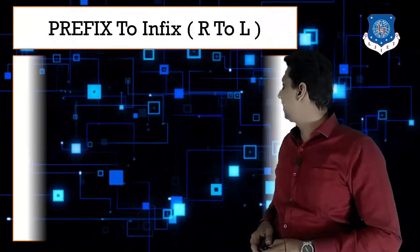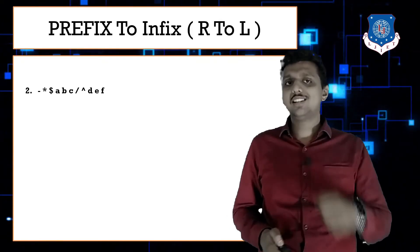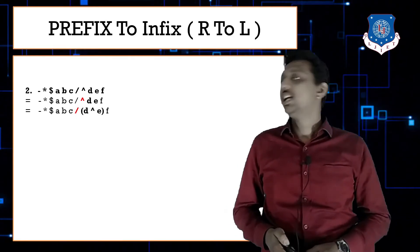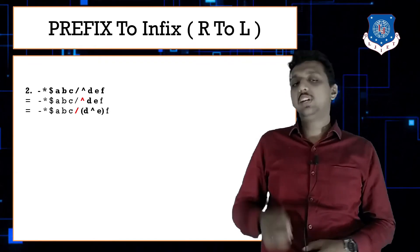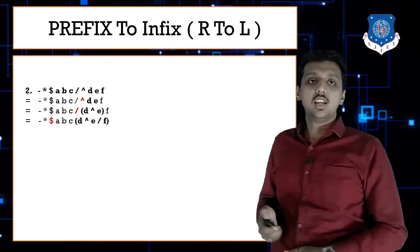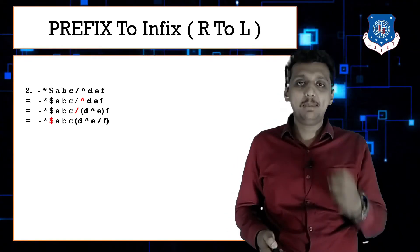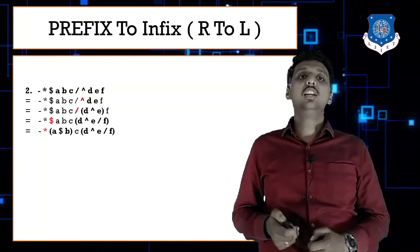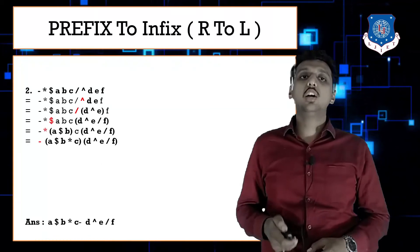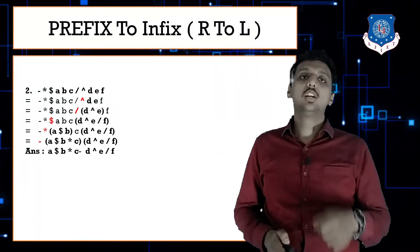Another example: -*$abc/^def. Go right to left. First find '^': put it between d and e → d^e. Next find division: put it between d^e and f → (d^e)/f. Next find '$': put it between a and b → a$b. Next find '*': put between a$b and c → (a$b)*c. Finally, minus: answer is (a$b)*c - (d^e)/f.